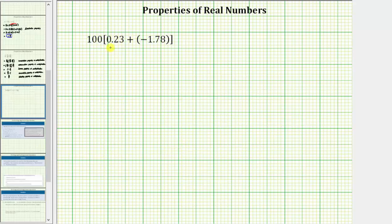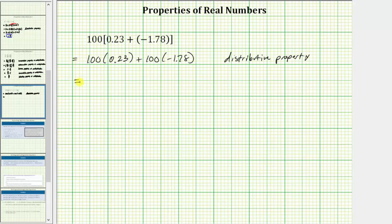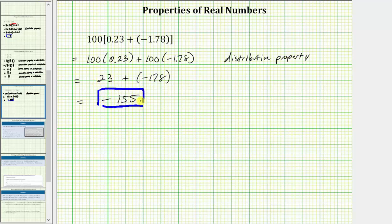For our last example, we have 100 times the quantity 0.23 plus negative 1.78. We begin by clearing the grouping symbols by distributing the 100, using the distributive property. The expression equals 100 times 0.23 plus 100 times negative 1.78. Determining the products: 100 times 0.23 equals 23, and 100 times negative 1.78 equals negative 178. Now we find the sum: 23 plus negative 178 equals negative 155. The given expression simplifies to negative 155. I hope you found this helpful.